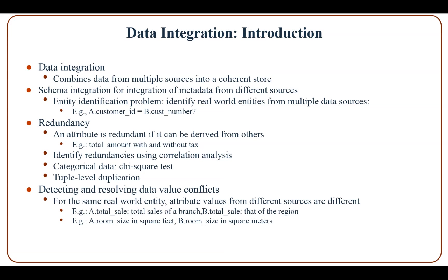Correlation between two categorical attributes can be discovered using the chi-square test. Redundancy at the tuple level should be considered as well, in which the same record can come from multiple sources. Another important issue is detecting and resolving data value conflicts: attribute values from different sources may differ — for example, total sales from source A may indicate sales of a branch while source B indicates sales of a region, or room size in source A may be in square feet while source B uses square meters.